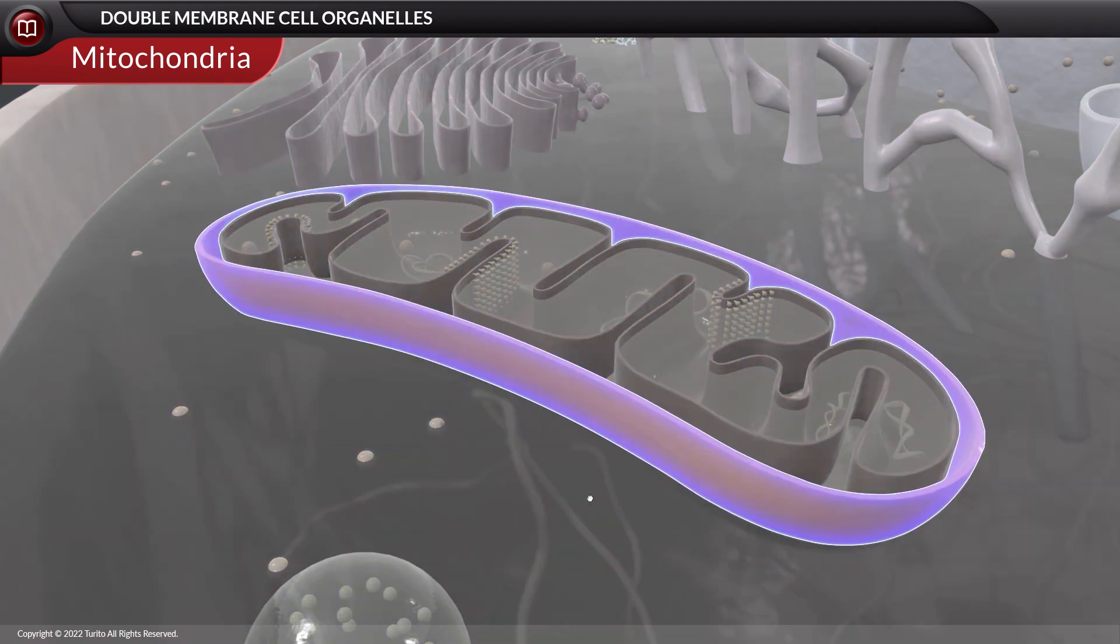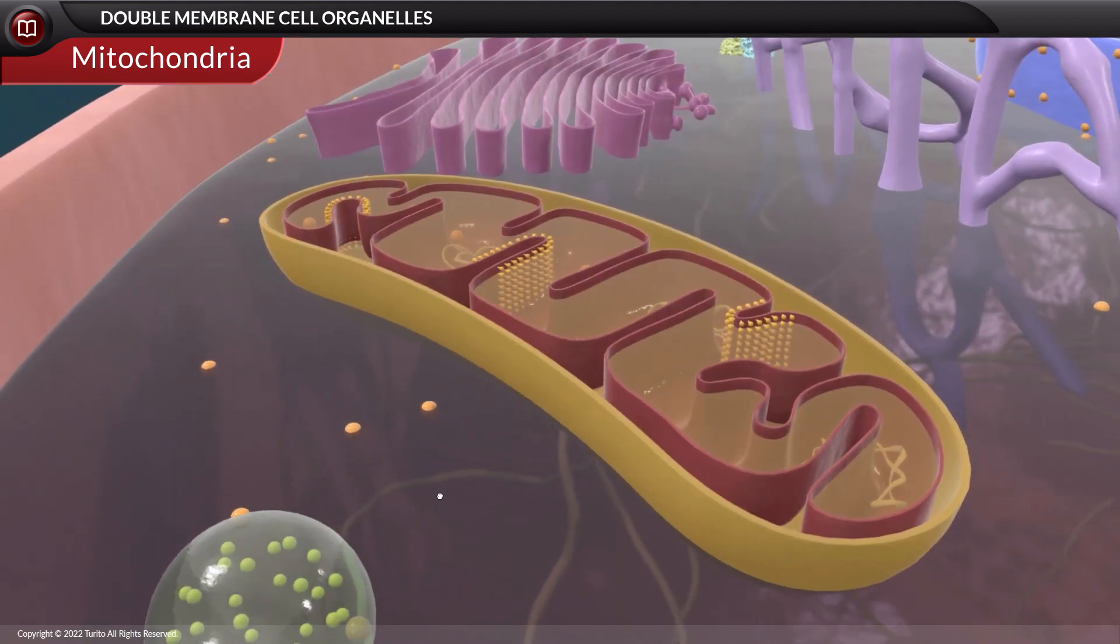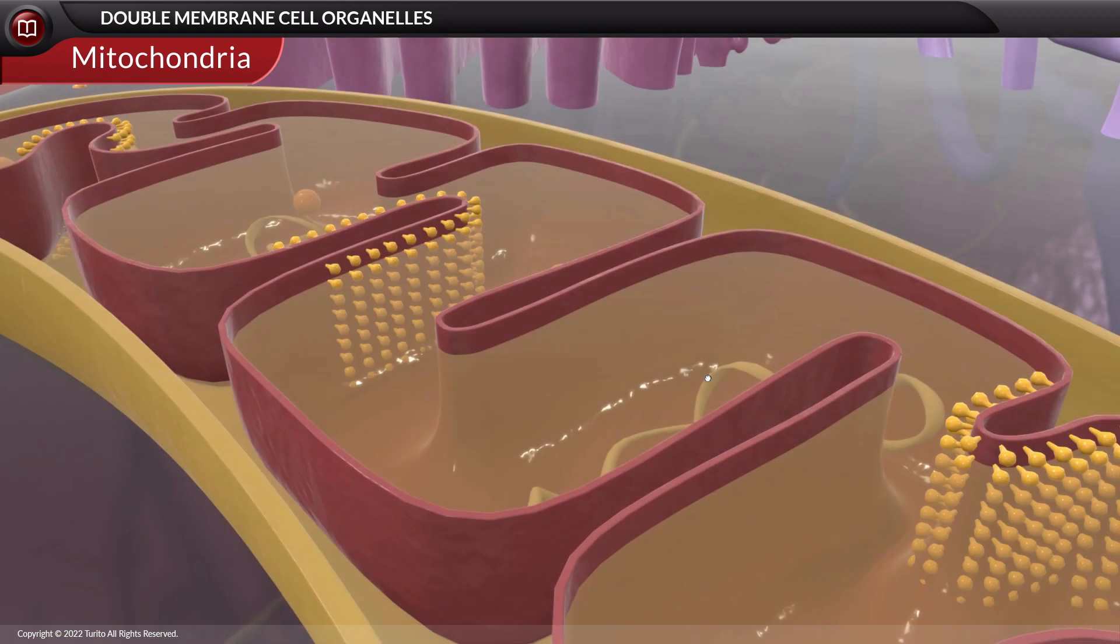The outer membrane is smooth and porous, whereas the inner membrane is thrown into numerous folds called cristae. Present on the cristae are stalk-like structures called the F0-F1 particles, also termed ATP synthases.